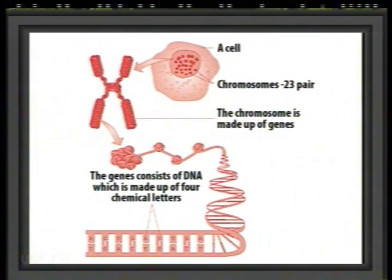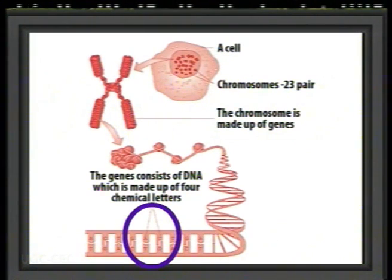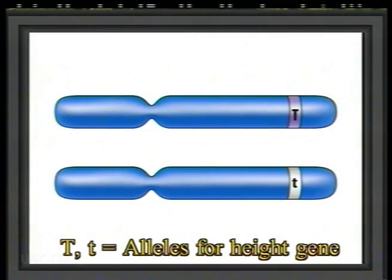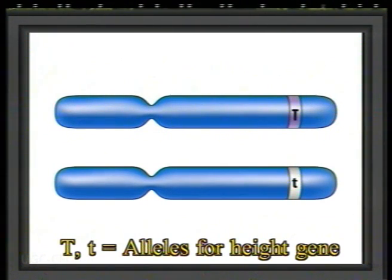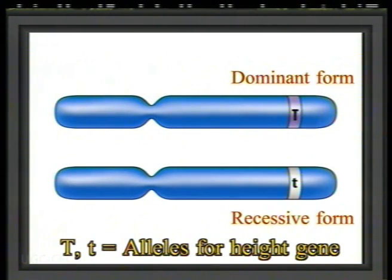He soon figured out what was happening. Since each character he was studying had two forms, Mendel concluded that each one was controlled by a single factor. Today we call these factors genes. Therefore, each gene has two alternate forms known as alleles. One form is dominant while the other is recessive. When the dominant form of a gene is present, it covers up or masks the recessive form.